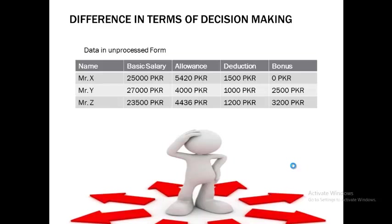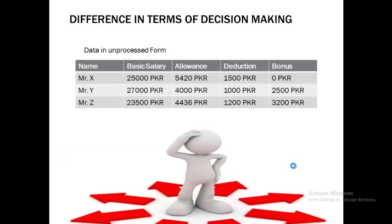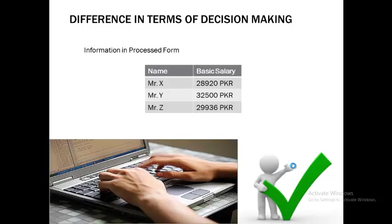But if we perform the processing — we add the allowances and bonus to the basic salary and subtract the deductions — we get a net amount. Mr. X has a salary of 28,920, which must be deposited in his account. Similarly, Mr. Y and Mr. Z's salary is also calculated. Now this is something on the basis of which I can take a decision. Going back to the previous example, I was not able to take a decision because that was data — it was unprocessed. But after the processing operation is applied, I get the net amount, and now I know how much should be deposited in the accounts of Mr. X, Mr. Y, and Mr. Z. This is because that net amount is the information — the processed form of data.